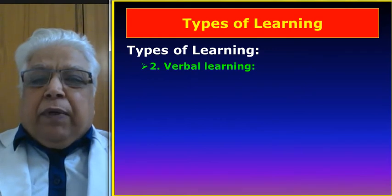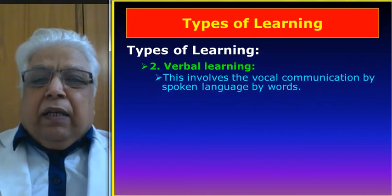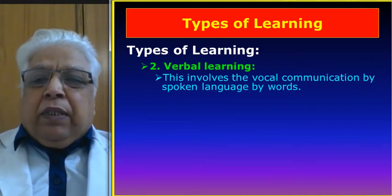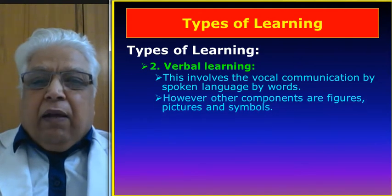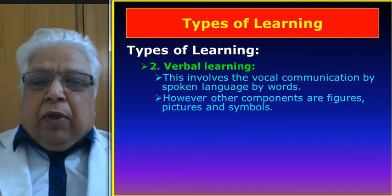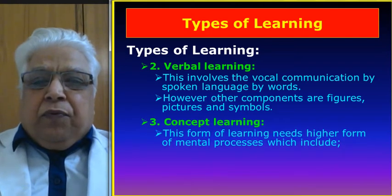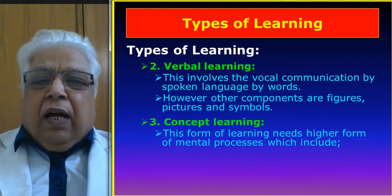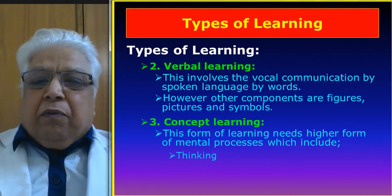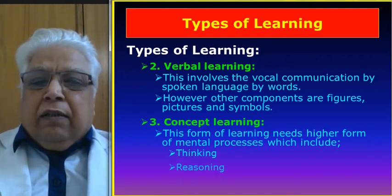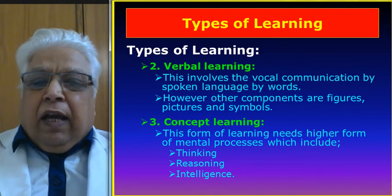The second type of learning is verbal learning. It involves vocal communication by spoken language and words. However, other components also include figures, pictures, and symbols. Number three is concept learning. This form of learning requires higher mental processes which include thinking, reasoning, and intelligence.